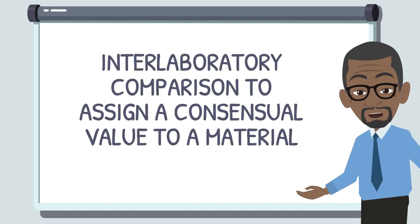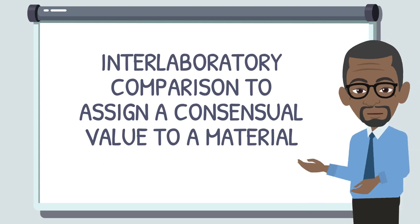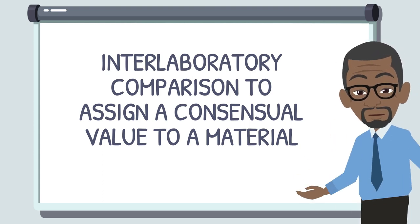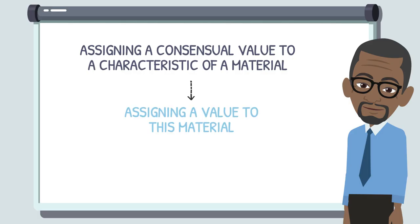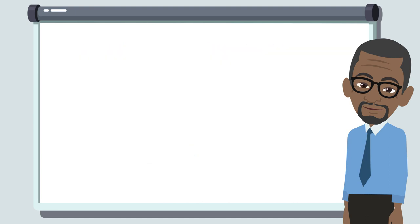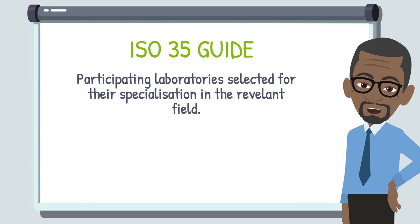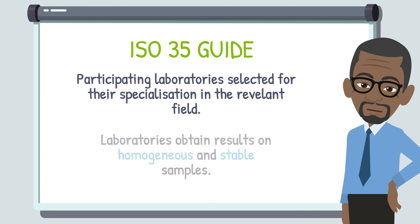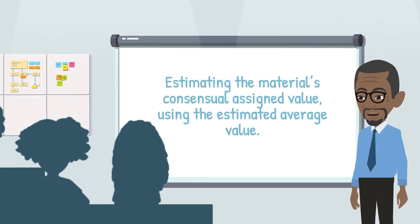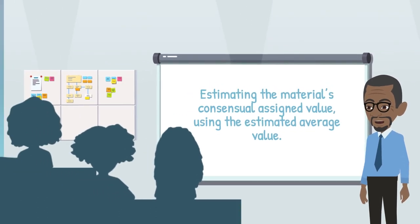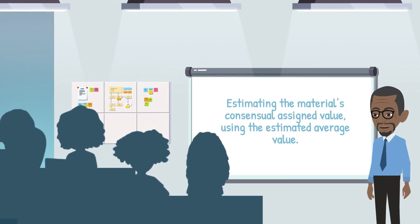Finally, if we wish to attribute a consensus value to a characteristic of a material, we will assign a value to this material. The associated standard is ISO 17034, General Requirements for the Competence of Reference Material Producers. This standard is backed up by a detailed ISO 35 guide. The participating laboratories are selected for their specialization in the relevant field. These laboratories obtain results on test items that are sufficiently homogeneous and stable. The purpose is to estimate the material's consensus assigned value using the correctly estimated general mean.